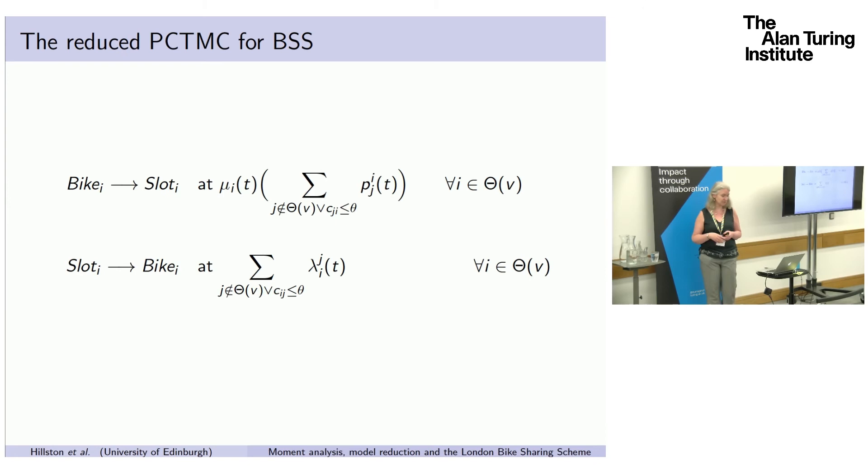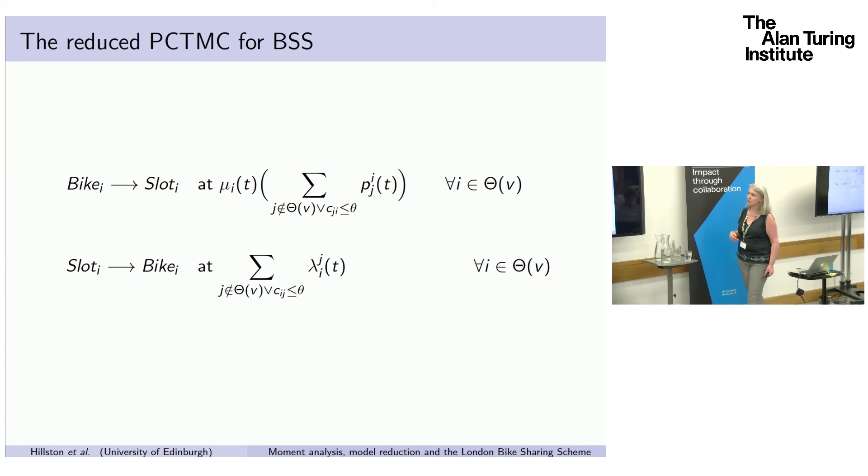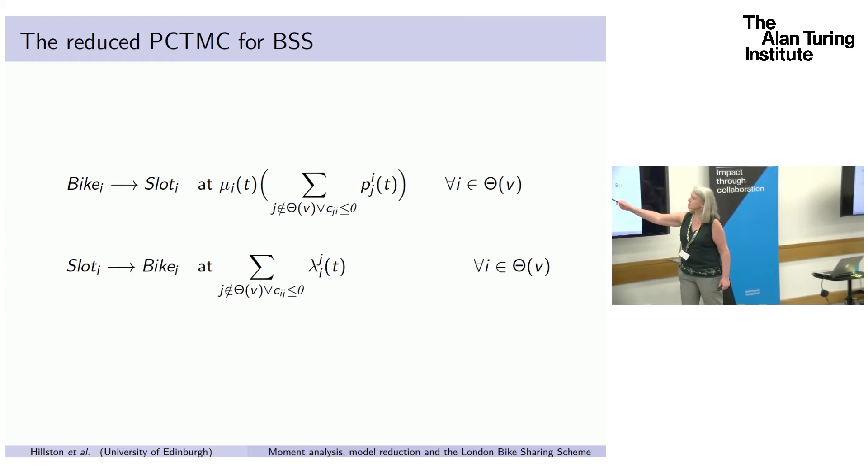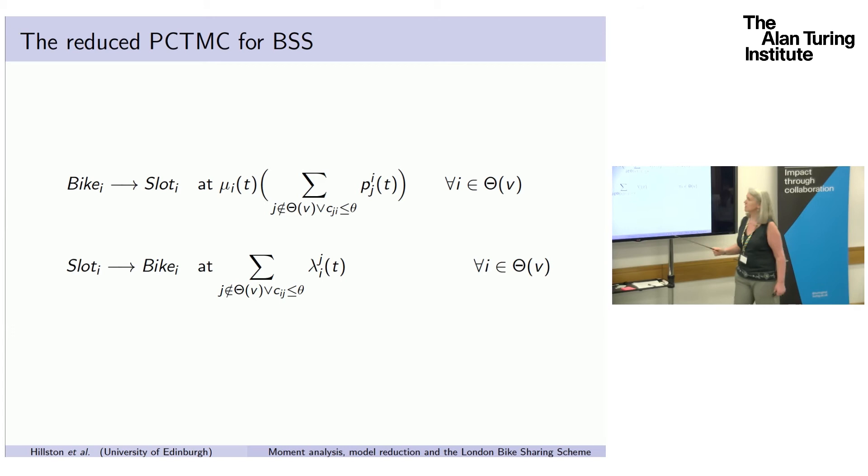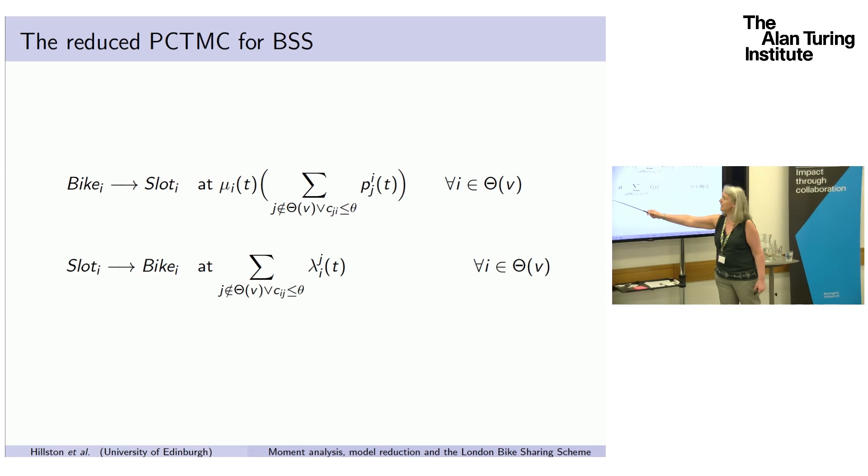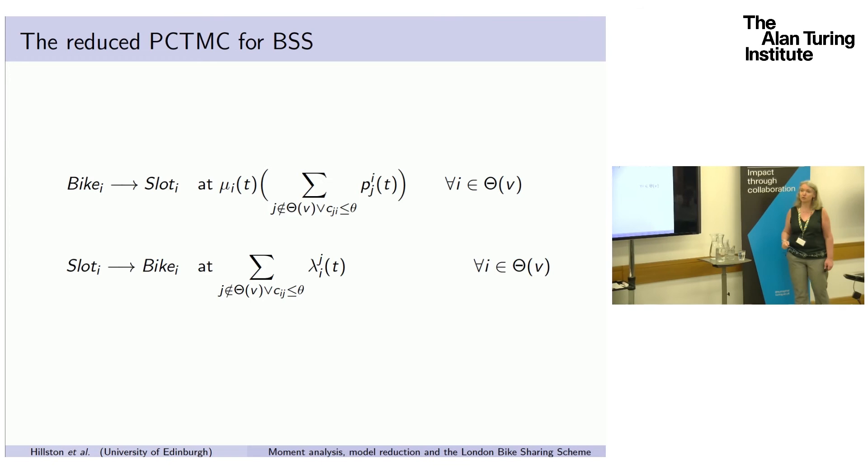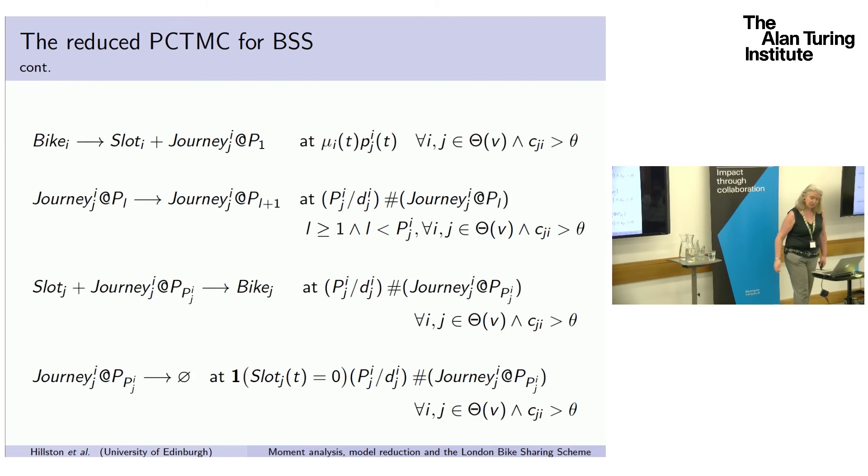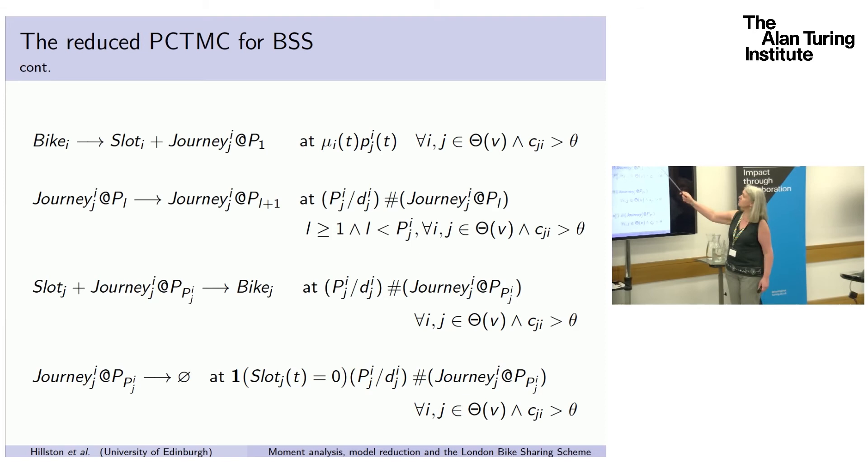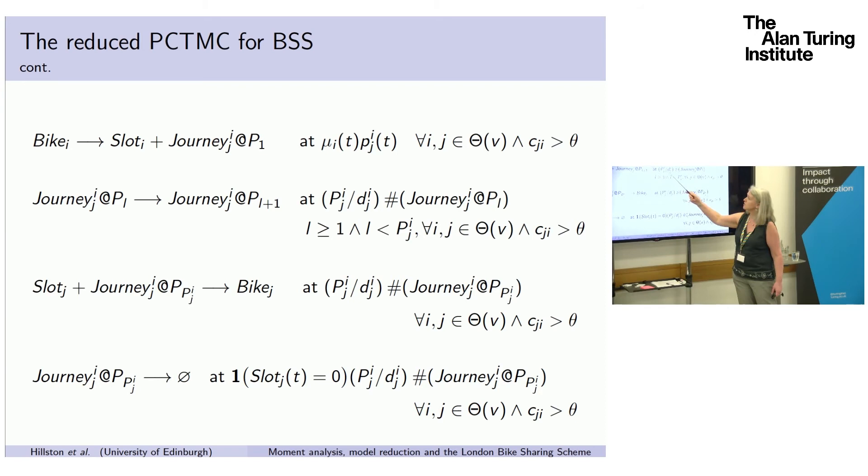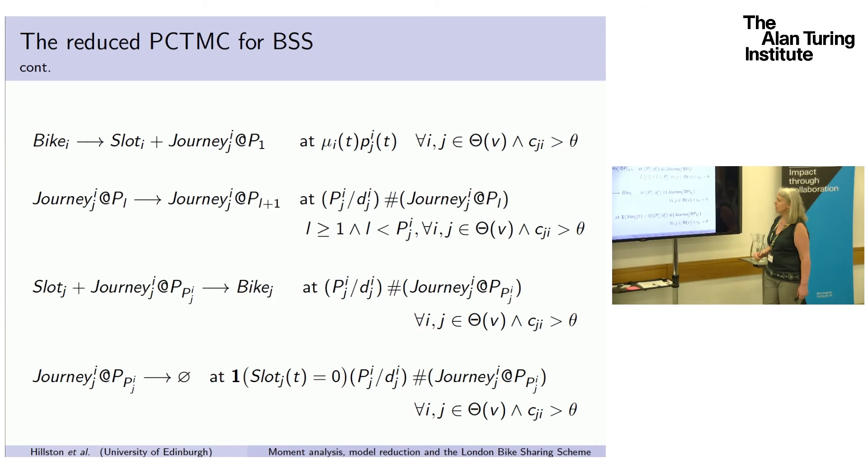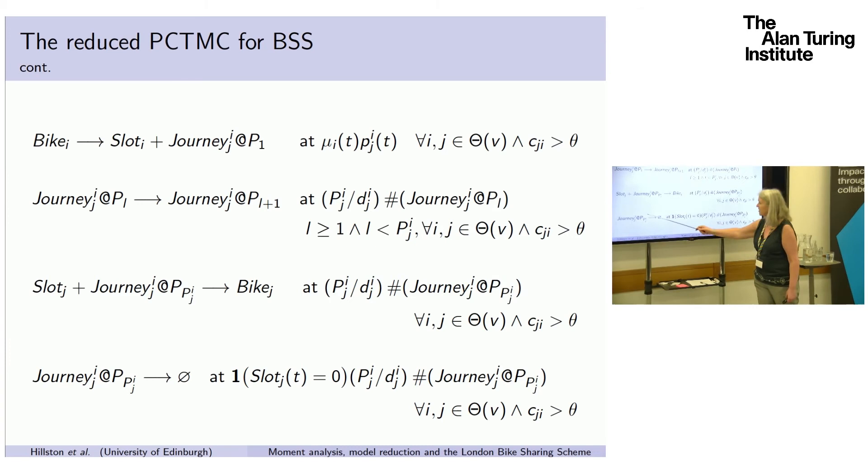Then we can do as we did before of building our model in the reaction network style. First of all, we take care of the ones that are not in our significant set. So any bike can just move out of the system from our point of view and become a slot if it's gone off into the rest of the world we don't care about. But equally, one of those can come back and turn a slot into a bike. Those are the ones that are not really significant, but we just keep them to represent the outside world of our model. And then within our model, the ones that we care about where we have a significant flow, it's pretty much just as before. Bikes can become slots and journeys. Journeys progress along the phases of the Erlang distribution. At the end of the Erlang distribution, a slot becomes a bike. And then we have some of them just disappear if where they end up is not within our set.